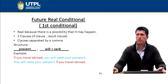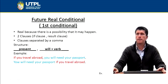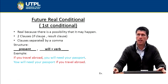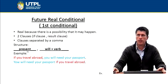Future real conditional — this is also known as the first conditional. It's called the real conditional because there is a possibility that it may happen. It is formed by two clauses: the if clause and the result clause, separated by a comma. In the first part you're going to have the present tense, and in the second clause you're going to have will plus the verb, which is the future.